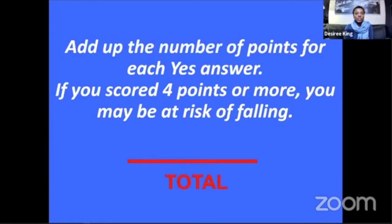Now after you're finished doing the survey, you would add up the number of points for each yes answer. If you scored four or more points, you may be at risk of falling. If you or the person you are caring for is at risk of falling based on these questions, the next step is to have a conversation with family, friends, or those in the community who may be supportive.